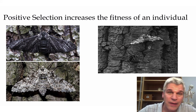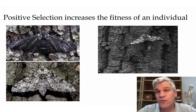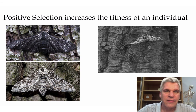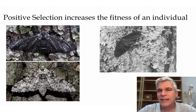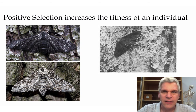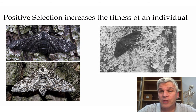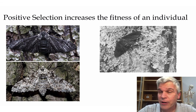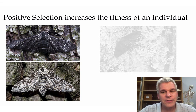And then fast forward to the 1970s — the air started getting cleaner because they started cleaning up the pollution, and the tree barks were getting lighter in color. And guess what? The lighter colored moths are now more common than the darker ones.